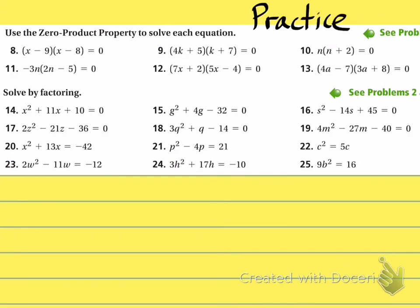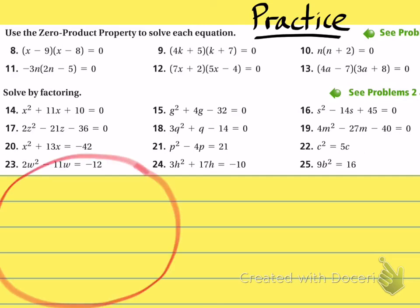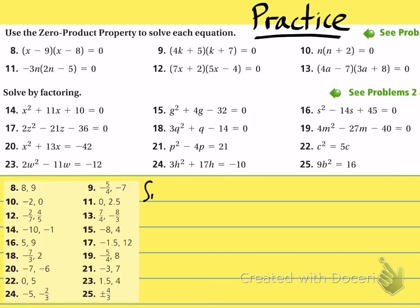Here are some practice problems — pause the video, and when you hit resume you'll see all the answers appear. Hopefully you got a lot of them correct. You'll notice on number 25 they use the plus-minus sign. Rather than writing positive four-thirds and negative four-thirds separately, you can use the plus-minus sign — that means the same thing.